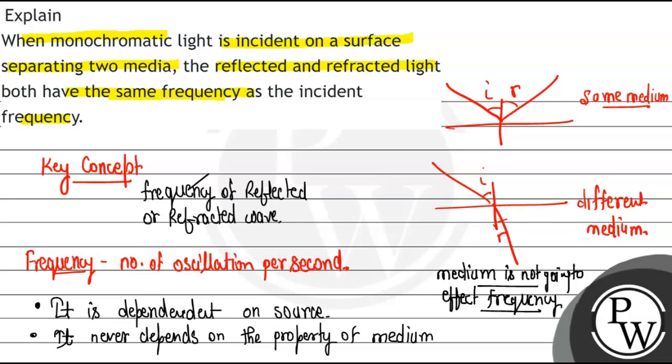So the given statement - when monochromatic light is incident on a surface separating two media, the reflected and refracted both have the same frequency as the incident frequency - this is a true statement. So this is the answer for this question. I hope you understand it well. Best of luck, thank you.